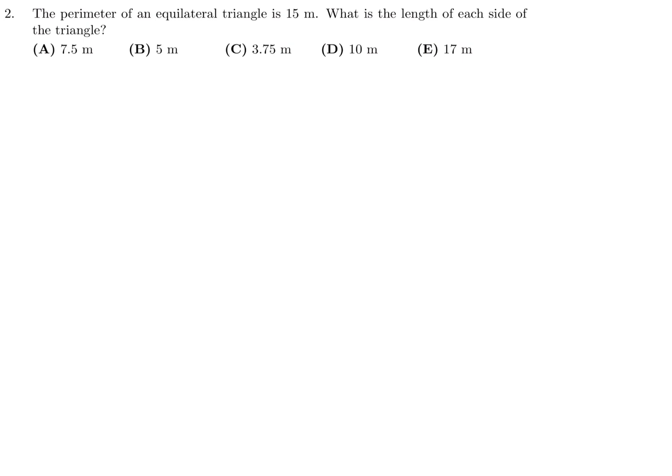The perimeter of an equilateral triangle is 15. What is the length of each side? If it's equilateral, all three sides are the same. We can call those sides X, X, and X. Therefore, 3X equals 15, because that's the perimeter. Solving for this, 15 divided by 3 is X, and therefore X is 5. So the side length is 5. Number 2, the answer is B.